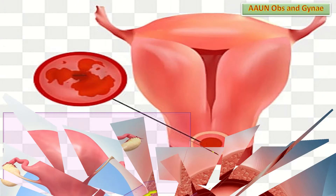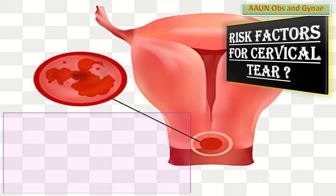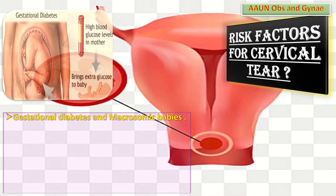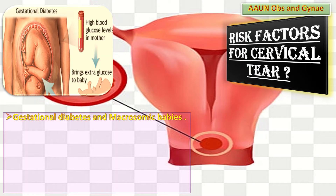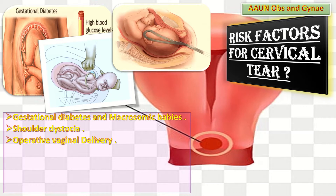Let us start from the risk factors or what causes the cervical tear. The causes include, first of all, gestational diabetes and macrosomic babies. Secondly, shoulder dystocia. Thirdly, operative vaginal delivery — because with forceps, vacuums, or both, especially in case of undilated cervix, there is increased incidence of cervical tear.